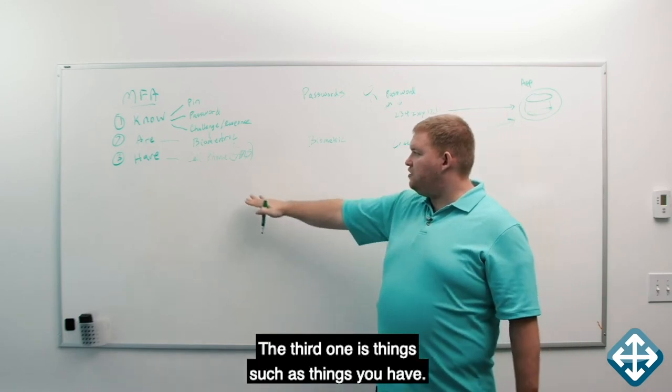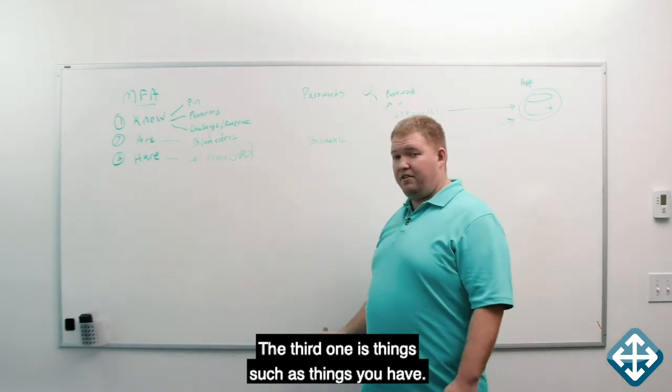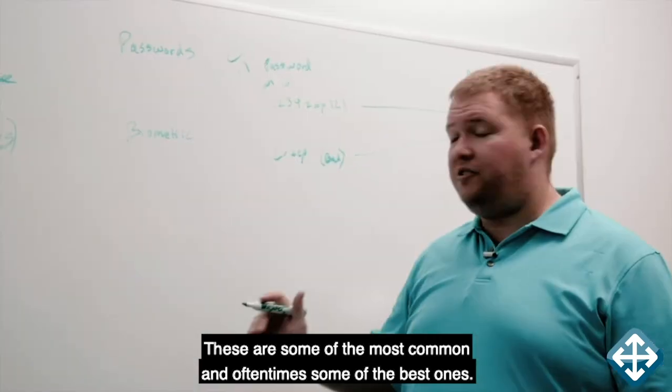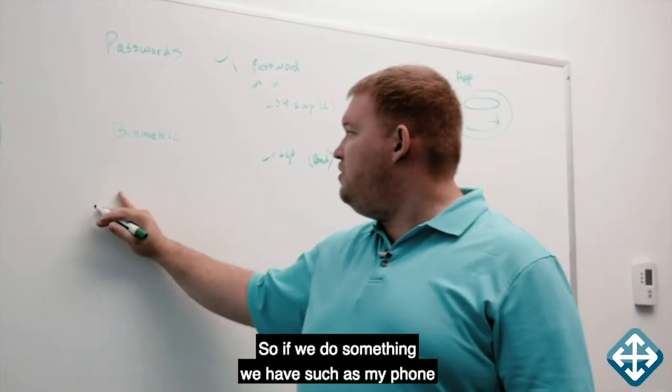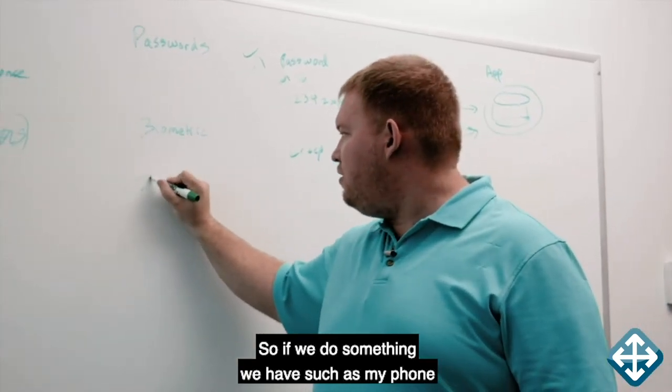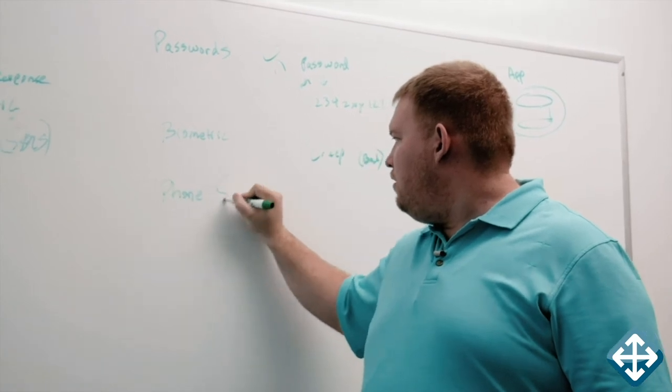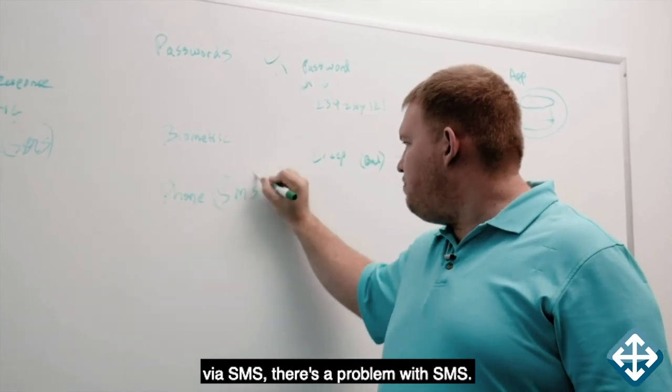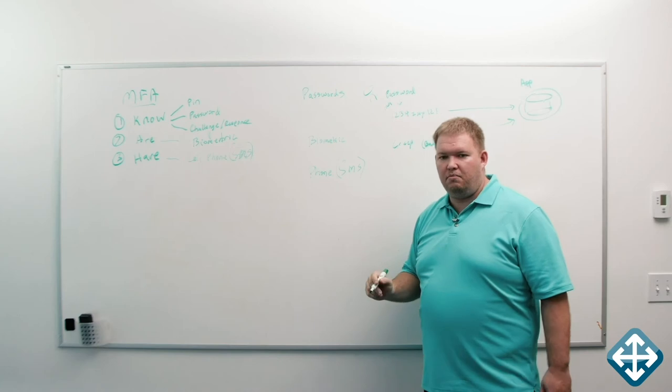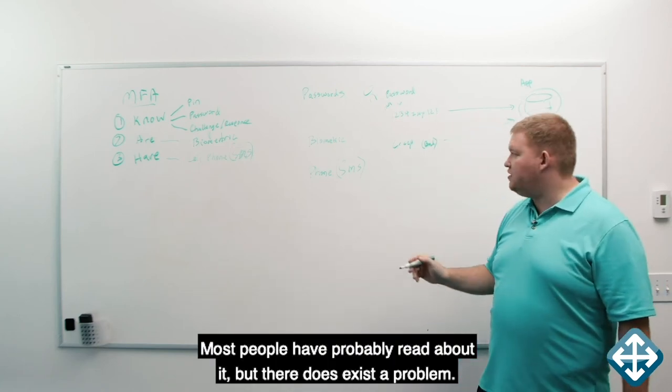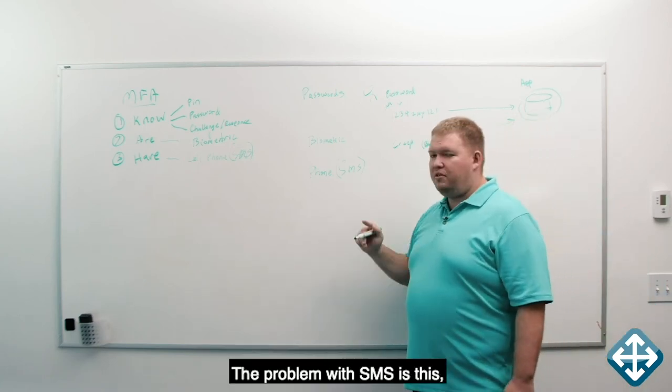The third one is things such as things you have. These are some of the most common and oftentimes some of the best ones. So if we do something we have such as my phone via SMS, there's a problem with SMS. Most people have probably read about it, but there does exist a problem. The problem with SMS is this.